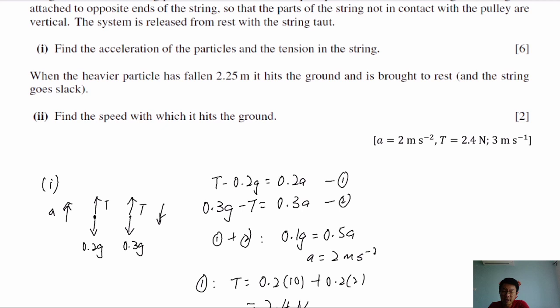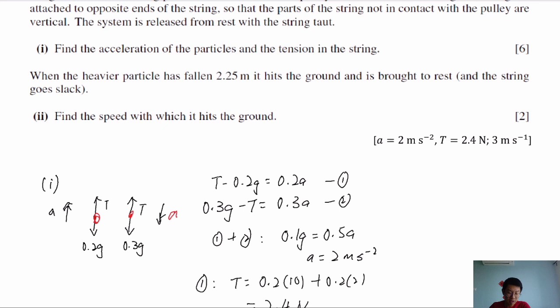Because we have two particles with different masses, the side with higher mass will fall down. The 0.3 kg particle will move down, so its acceleration is downward; the 0.2 kg particle will go up, so its acceleration is upward. It's important to mark the acceleration so we can determine whether each force is positive or negative when applying F = MA to the two separate particles.